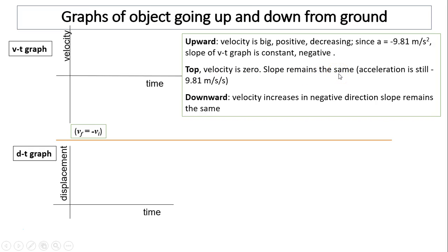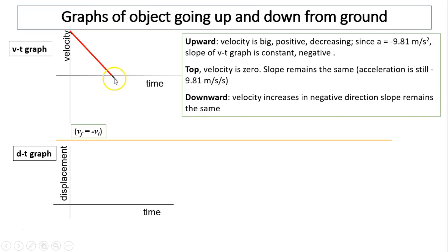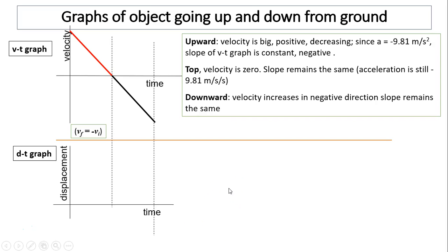Then it comes down. It goes up, becomes zero, then comes back down. When it comes down, velocity is negative — below zero — increasing in the negative direction. So the graph should show a constant slope: velocity becomes zero, turns around, then comes right back down. That is your velocity versus time graph. Now let's take a look at special times: in the beginning, right at the top, and at the end.